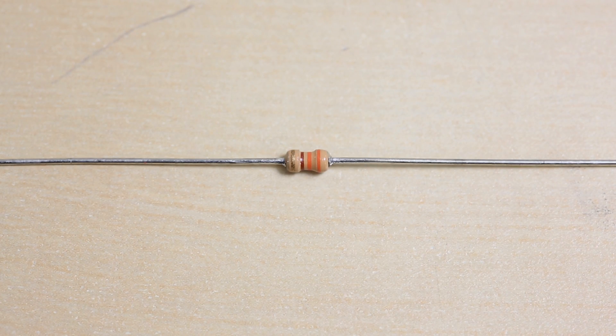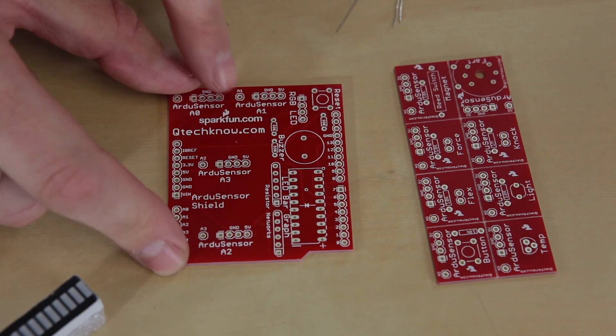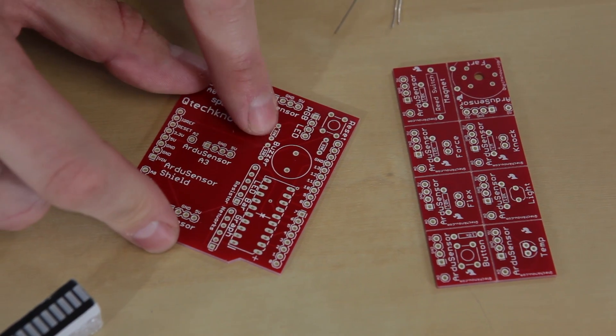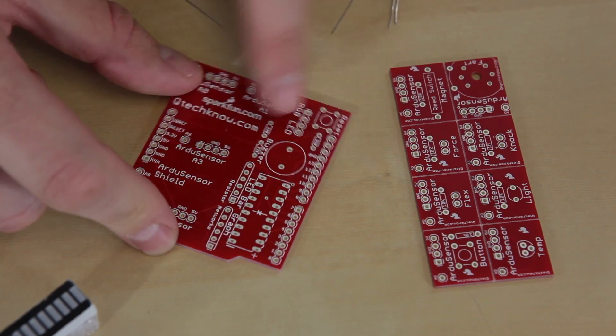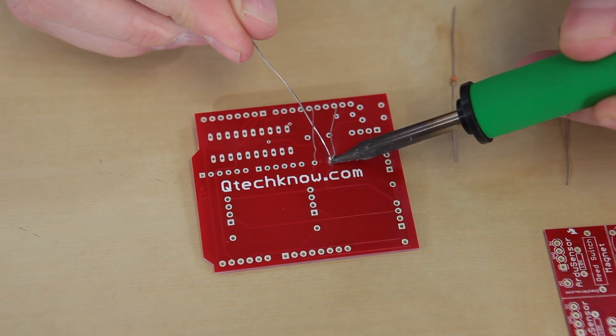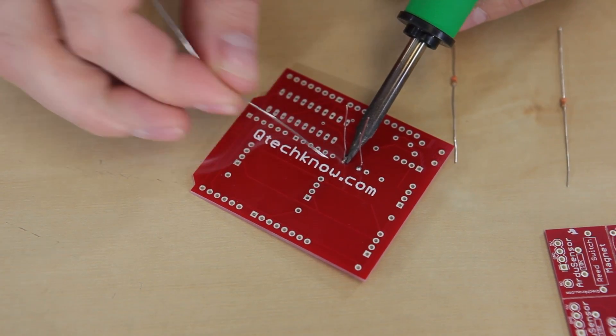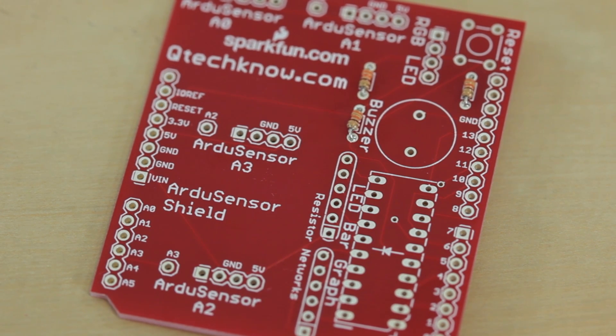The first thing we're going to do is take the 330-ohm resistors and solder them onto the shield. The three go right here, right here, and right there, clearly labeled 330. I always like to start with the smallest components first because then we can easily position them on the board.